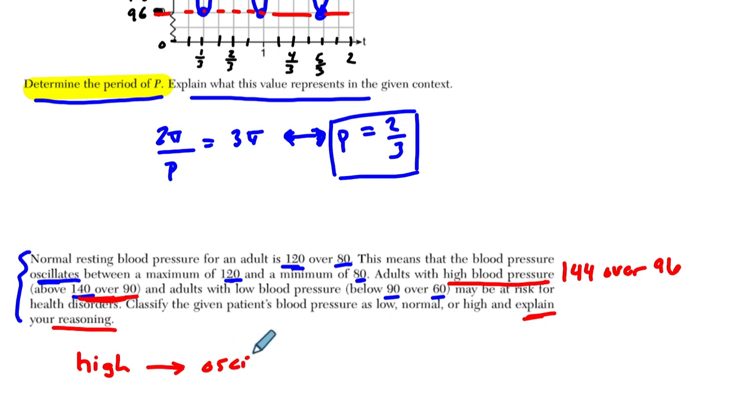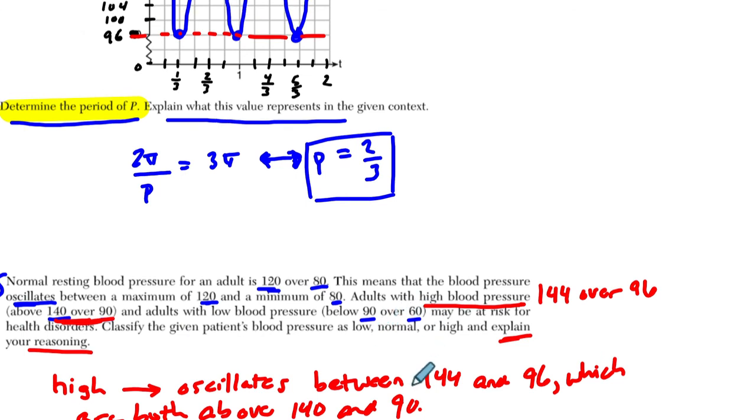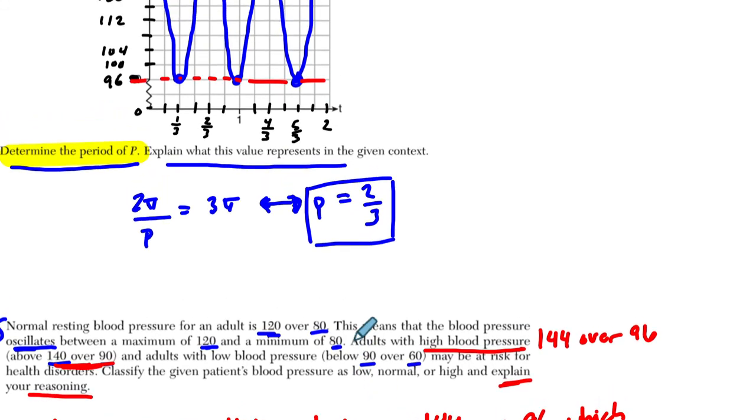And so here you could say it's high. And why is that? Well, it's because the numbers are higher than 140 over 90. So it oscillates, you could be very literal about this, between 144 and 96, which are both above 140 and 90. It's very literal. You might not really understand what this means. I certainly know very little about it. But the idea is I can recognize the numbers fit those certain categorical boundaries. And that's it.